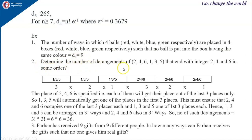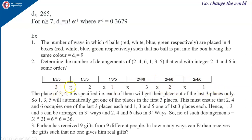Next question: determine the number of derangements of 246135 that end with 246 in some order. Since it must end with 246, these three digits occupy the last three positions and 135 occupy the first three positions. The first three positions can be filled with 135 in 3 factorial ways and the last three positions with 246 in 3 factorial ways, giving 3! times 3! which is 36 ways.